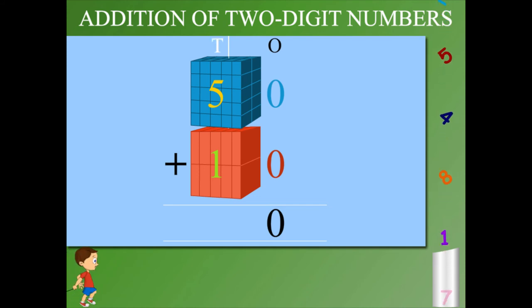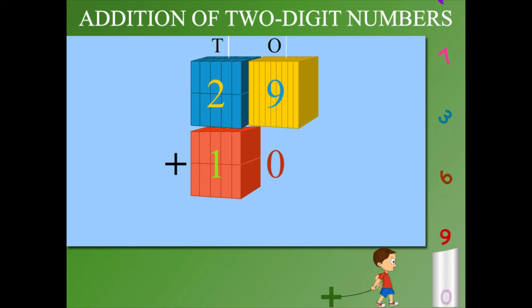No ones, so add the tens. It becomes 60. Here is 29 plus 10.